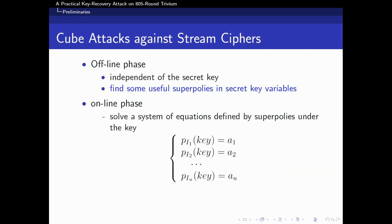There are two phases in cube attacks. The first phase is the offline phase, which is independent of a secret key. During this phase, the aim is to find some useful superpolys in secret key variables. The second phase is the online phase. In this phase, the task is to solve a system of equations defined by superpolys under the secret key.